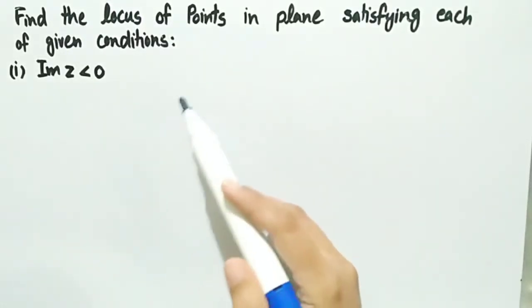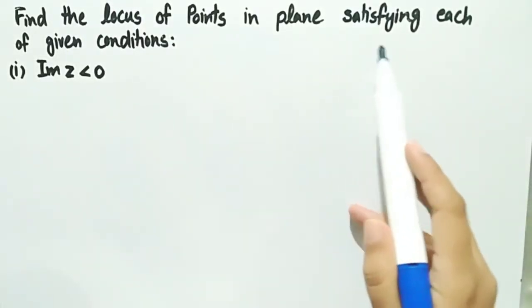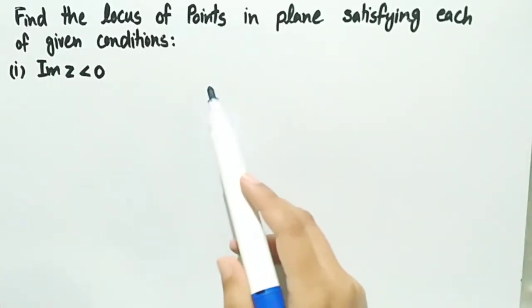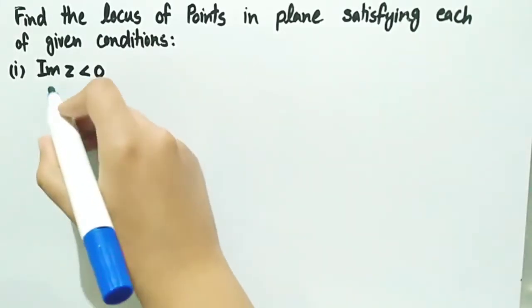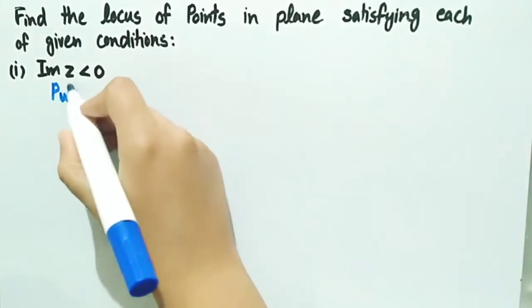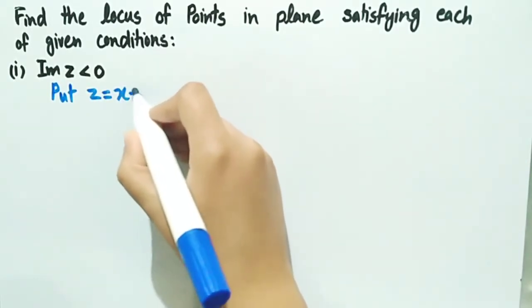In this video we will find the locus of points in plane satisfying each of given conditions. First one is imaginary part of z is less than zero. Firstly we will put z equals x plus iota y.